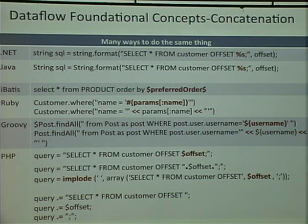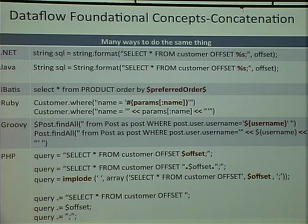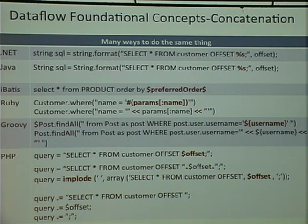One of the basic things you've got to understand when code reviewing is the concept of concatenation. If you look at every single data flow vulnerability, what's involved? Concatenation. They're concatenating into a SQL statement, they're concatenating into HTML, they're concatenating into a file path. You've got to know all the ways that they can concatenate untrusted data into something that's going to be vulnerable.